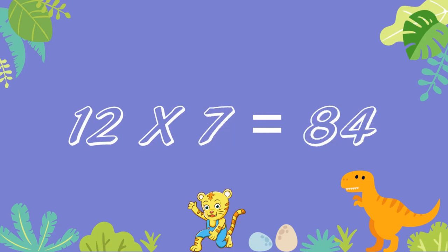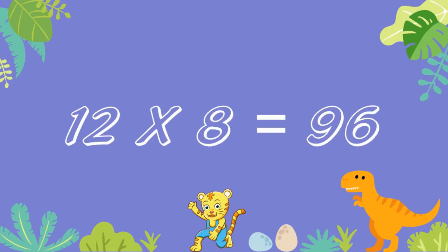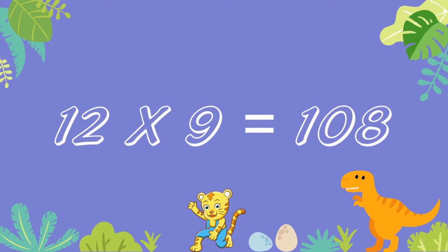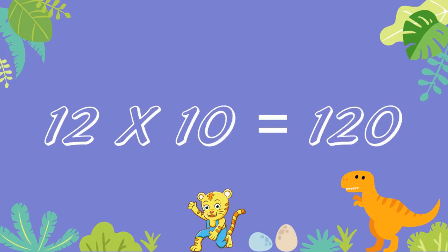12 sevens are 84. 12 eights are 96. 12 nines are 108. 12 tens are 120.